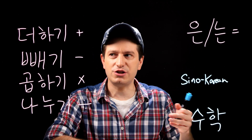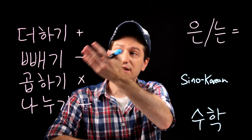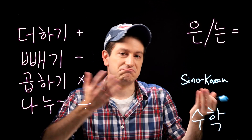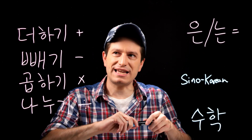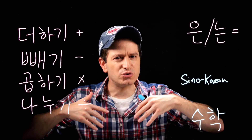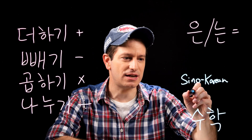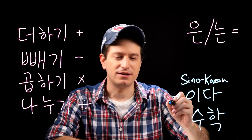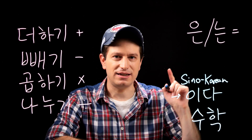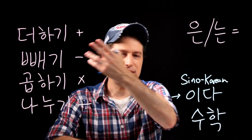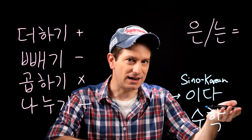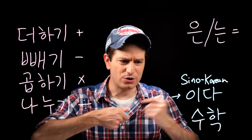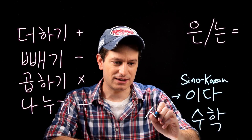Depending on the situation, you can just finish it like that — 일 더하기 일은 이 — and you're done. Or if you're saying it as an actual sentence, you can finish it by using the verb 이다, meaning 'to be.' So you can say 일 더하기 일은 이입니다, for example. And really that's all you need to know to do basic arithmetic, or 산수.